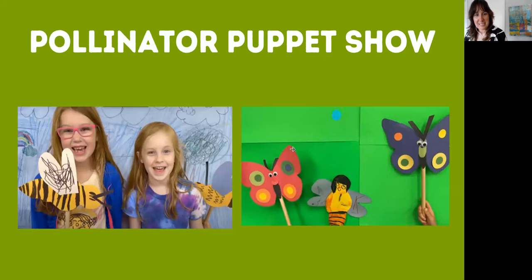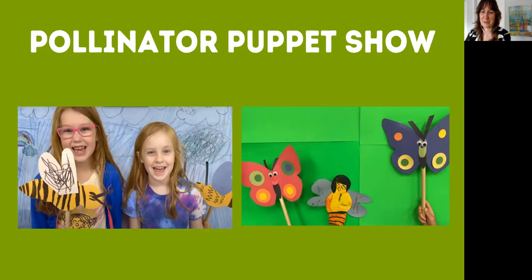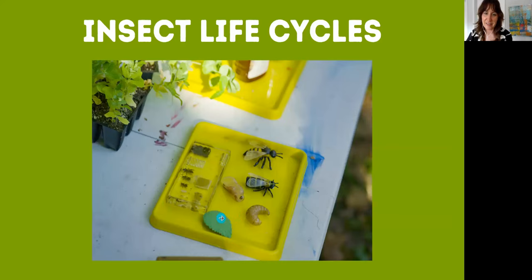Westchester Elementary did an activity last year — they did a pollinator news broadcast puppet show where their kindergartners made different pollinators, created a pollinator habitat in the background, and told the story with the pollinators. They made videos and sent them to me; it was very sweet and fun for the students. Of course, a great connection to make with pollination and pollinators is insect life cycles — going through the life cycle of a bee is a good connection to make for students.